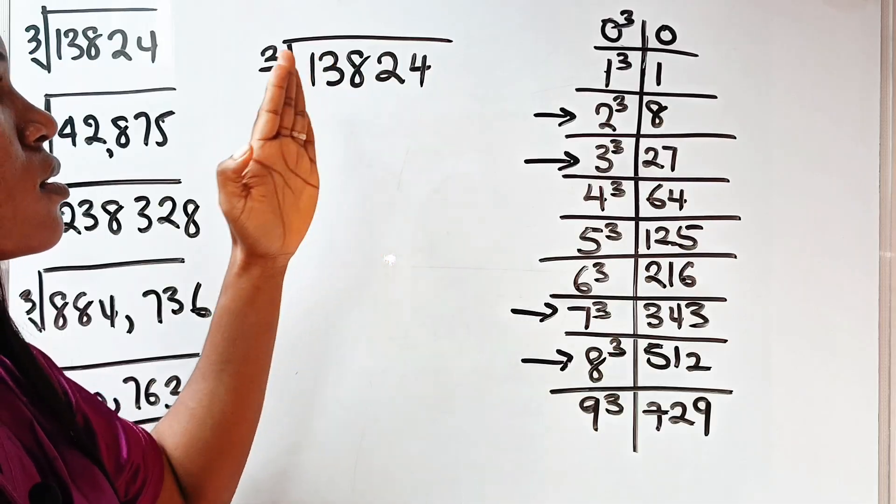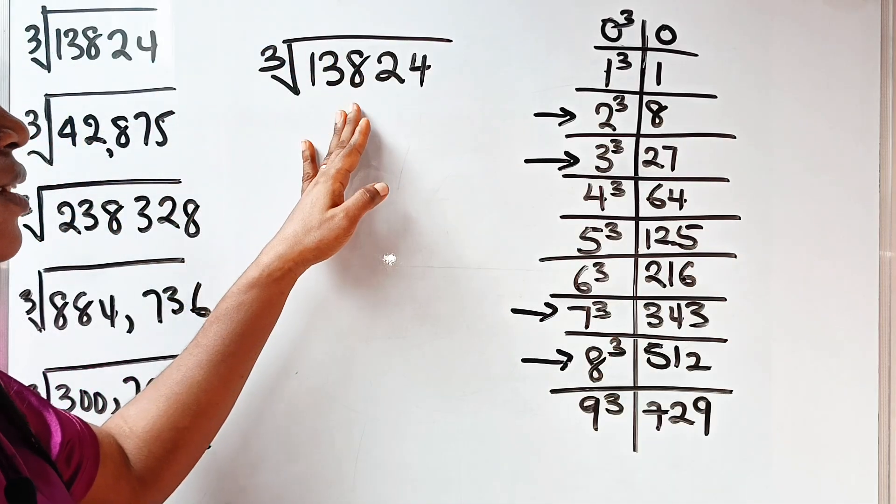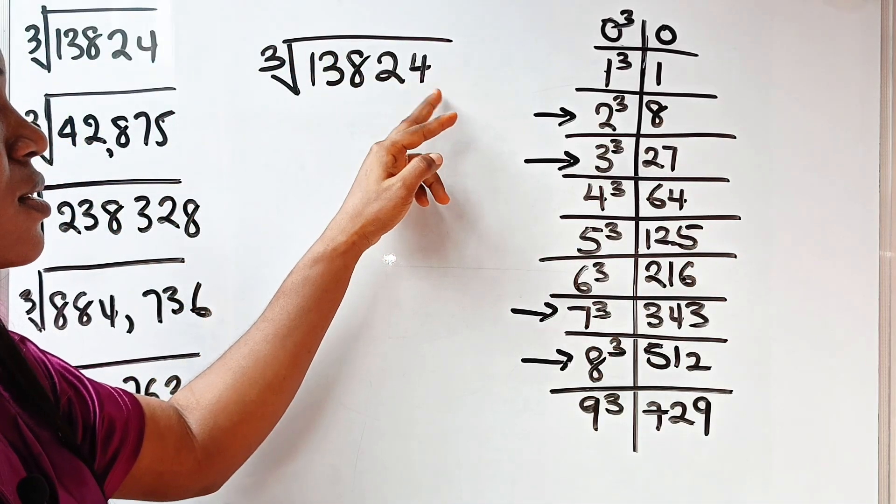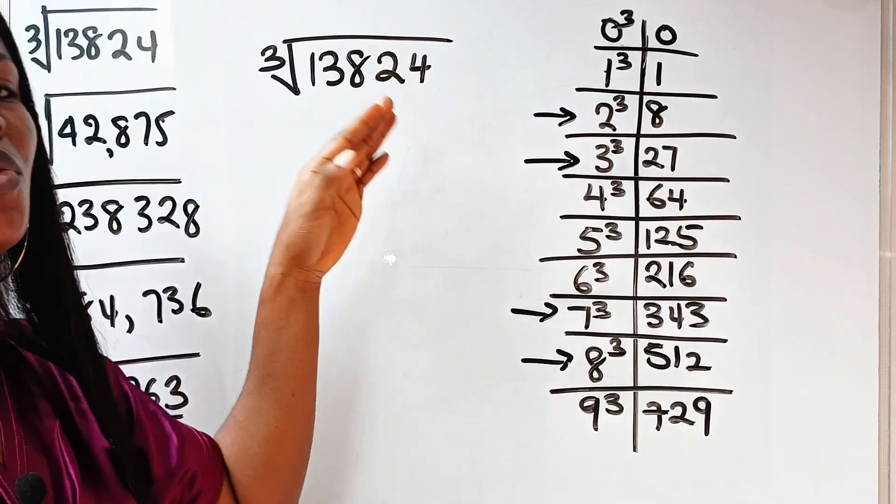Cube root of 13,824. So immediately you look at this, what number ends this? It's 4. So it means that the answer will end with 4.